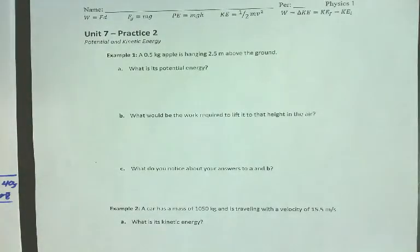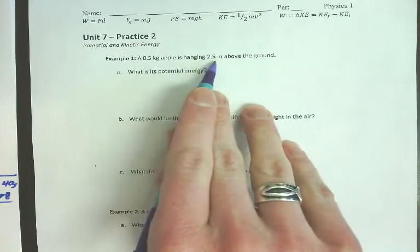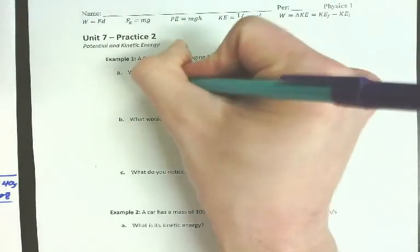You guys get started and that'll be the rest of the period. You can work on the practice and hopefully get done or close to done. A 0.5 kilogram apple is 2.5 meters above the ground. What's its potential energy?